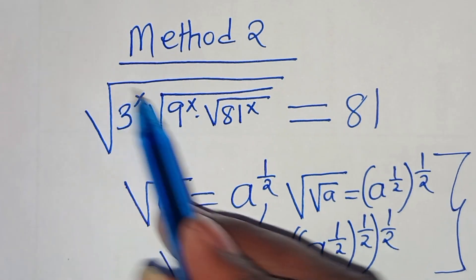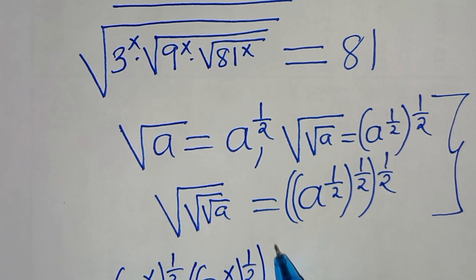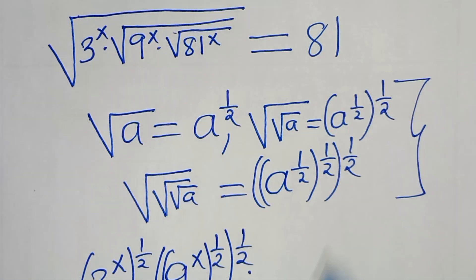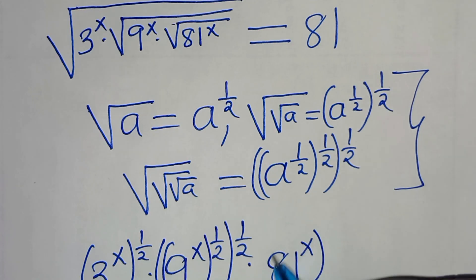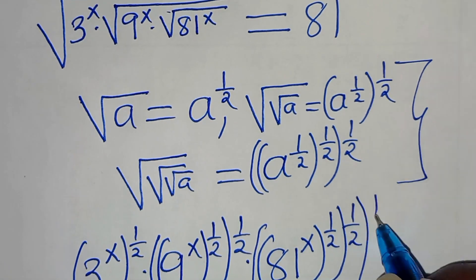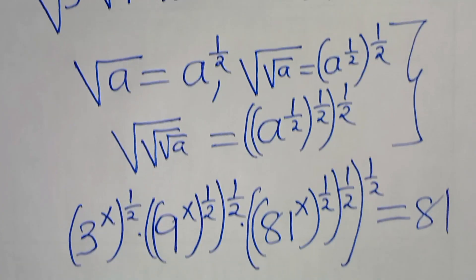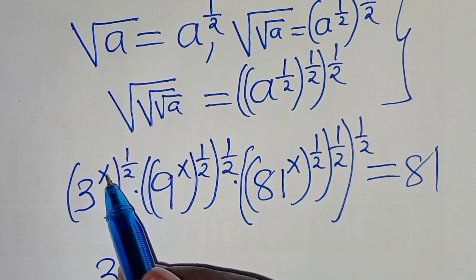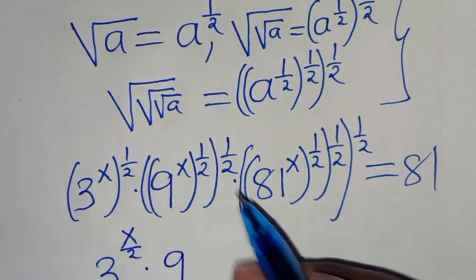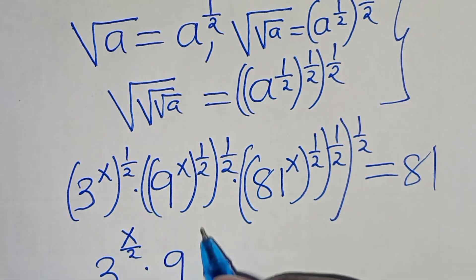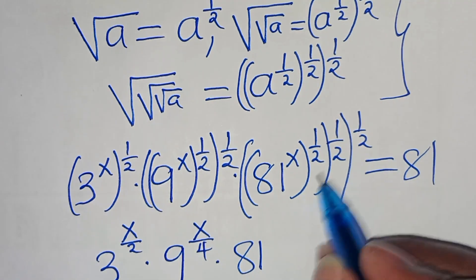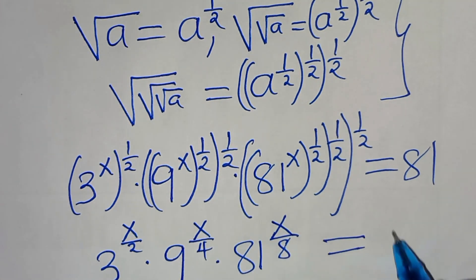For 9 to the power of x, we have 2 square root signs, so it is raised to the power of one half, and then raised to the power of one half. For 81 to the power of x, there are 3 square root signs, so we multiply by 81 to the power of x, raised to the power of one half, raised to the power of one half, and raised to the power of one half. This equals 81. Simplifying the exponents: 3 to the power of x times one half gives x over 2; for 9, one half times one half gives 1 over 4, so the exponent is x over 4; for 81, one half times one half times one half gives 1 over 8, so the exponent is x over 8. This equals 81.